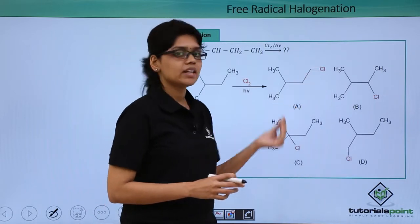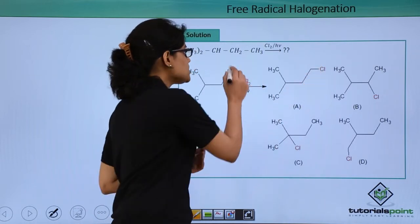Structure A we can see is a primary alkyl halide where chlorine has been added to this particular carbon atom.